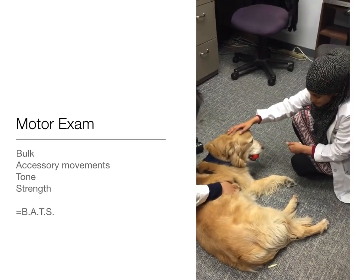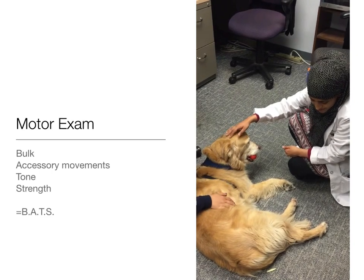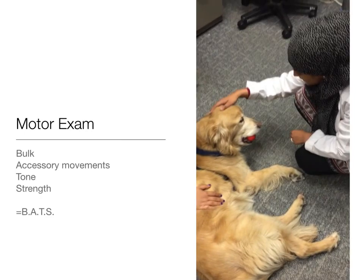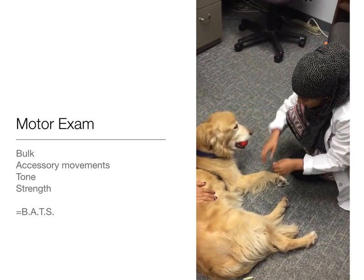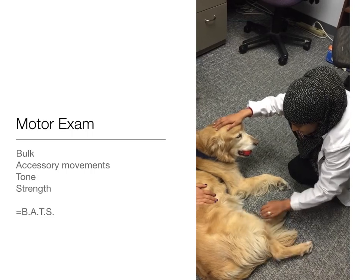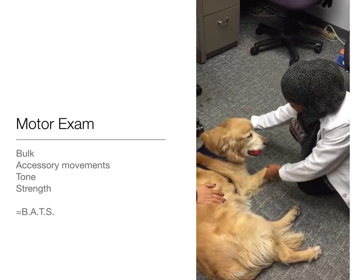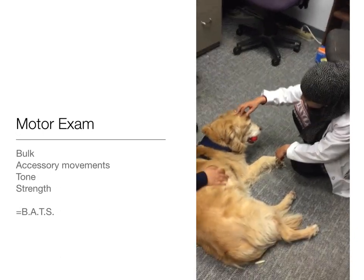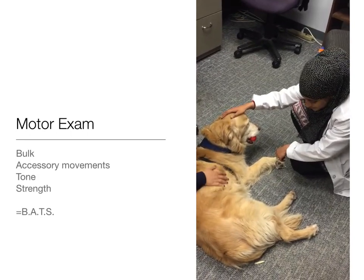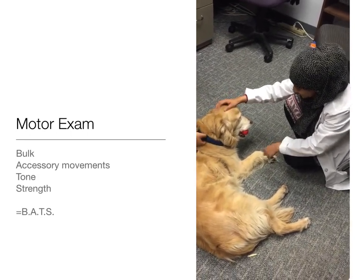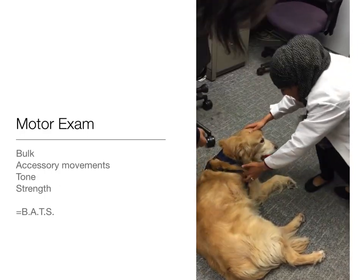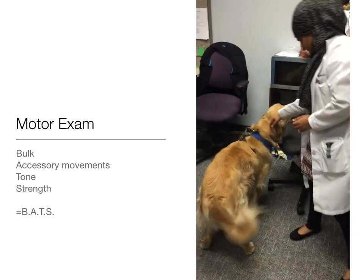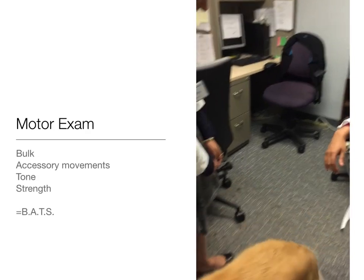An important part of the neurological exam is the motor exam. The first part is to check bulk — the bulk looks symmetrical on both sides. After that, you check tone; you can check the legs here. Since she's not moving right now, we can check motor power by having her stand up. She's able to stand on all four, and she's got good tail power.